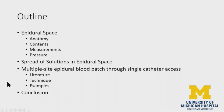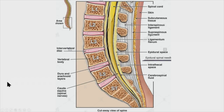So the outline: I'll go over a little bit of the epidural space, the anatomy, the content, some of the measurements — which came up and is why we decided to do this — and some of the pressure. I'll briefly go over the spread of solution in the epidural space, there's some really decent literature. And then I'll go over the multi-site epidural blood patch through a single catheter access, our technique, and then two case examples, followed by conclusions.